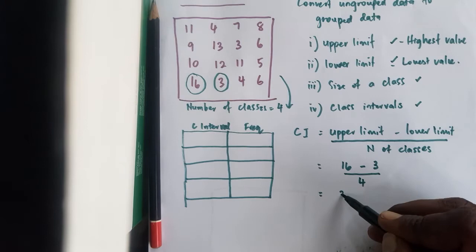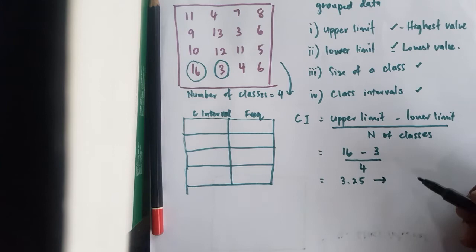And that would give you 16 minus 3 divided by 4, 3.25. Now very important is to convert this number to the next largest integer. And that would be 4.